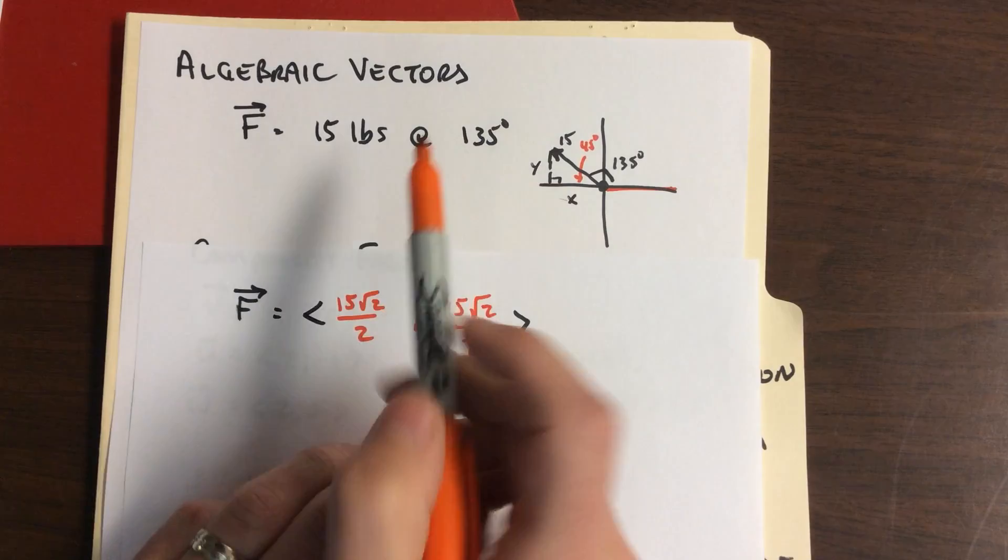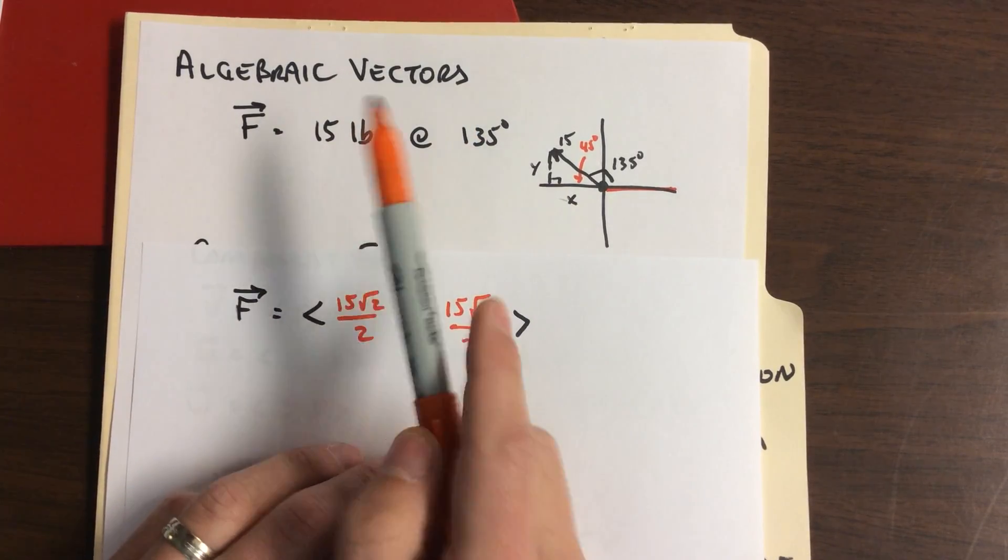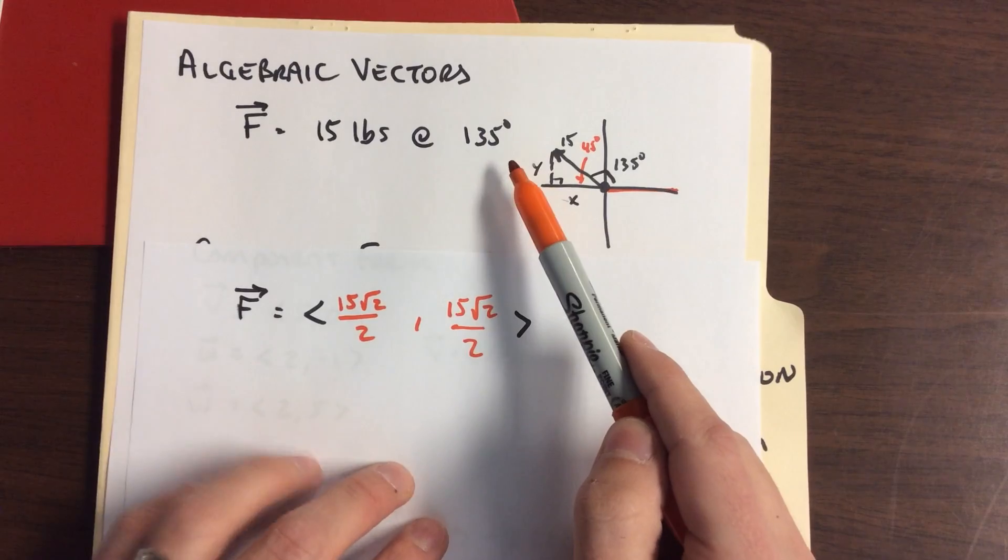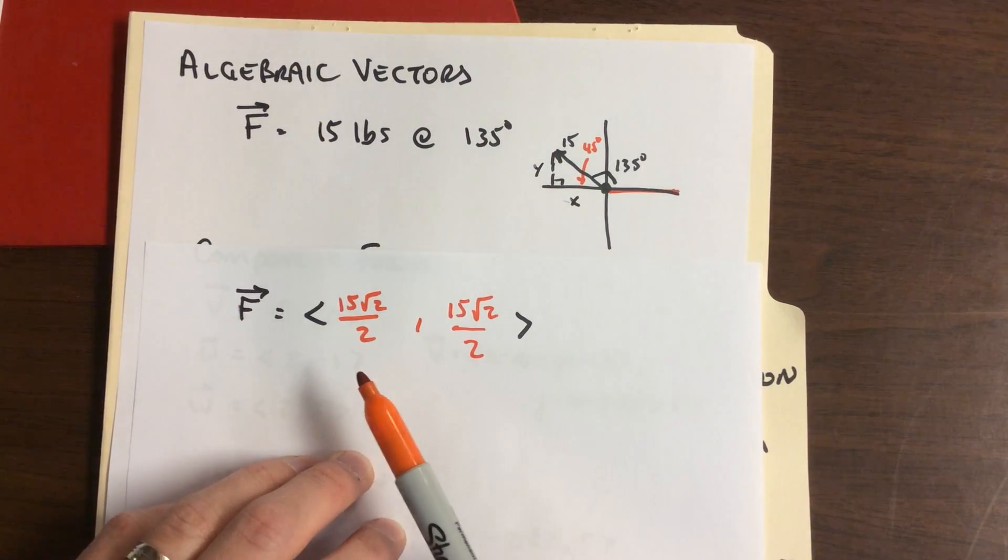So that vector in standard notation, where we separate the magnitude and the angle, we can put it into component form. Now here, cosine's got to be negative.